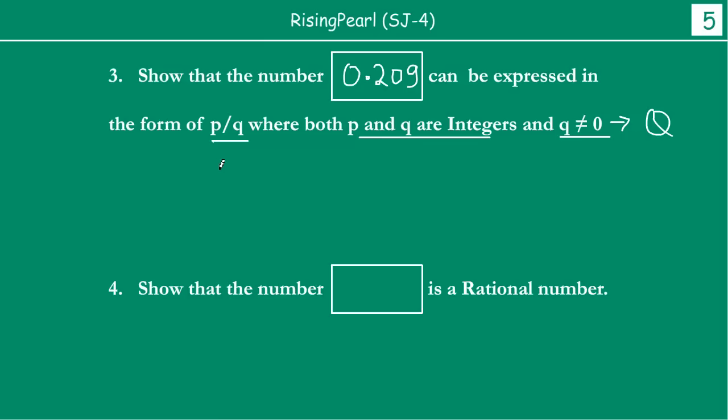So again we are going to start the same way. You are going to write 0.209 and then you will try to remove the decimal altogether. There are three places of decimals, so if you completely remove the decimal, you are going to write this as 209 divided by—because there are three places of decimals here—1000. Now this is nothing but the form p by q, so you will say, hey look,